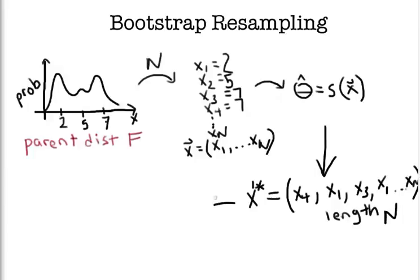And then from this bootstrap resample, we can do the same estimator and compute s of x1 star. And this provides a different estimate of our true value theta, or the true value of the estimator. So we'll call this theta hat one star.